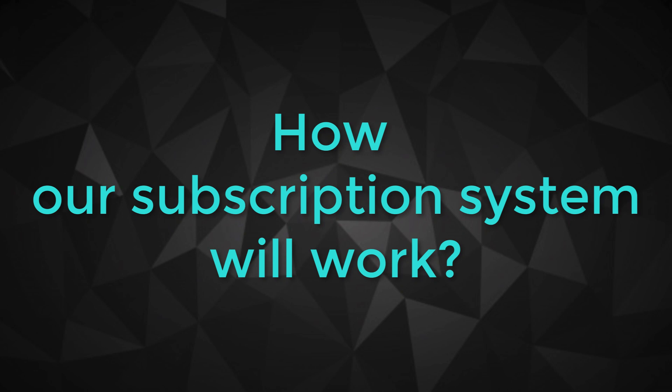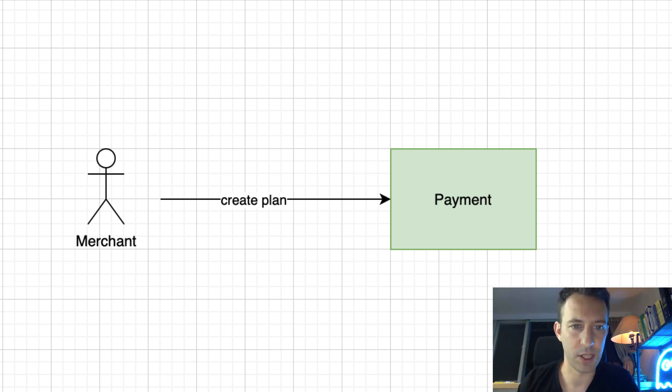The dream of every entrepreneur is to have a recurring income. If you sell a subscription with fiat money you can already use services like Stripe, but for crypto we don't have any equivalent service. It doesn't matter because we are developers, and on the blockchain we can create our own tools. In this video we are going to create a Solidity smart contract that can accept recurring payments in crypto. This can be used on any EVM compatible blockchain — Ethereum, Binance Smart Chain, and Polygon. I'm Julian and on Ether Blocks I teach blockchain development.